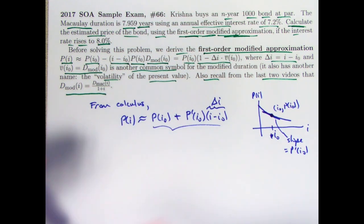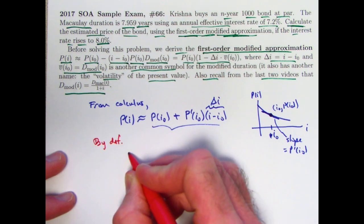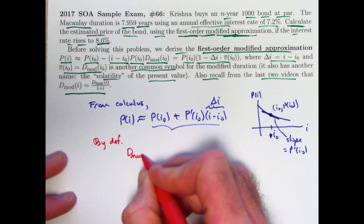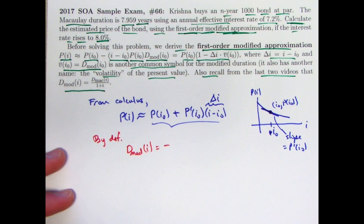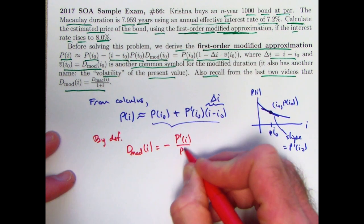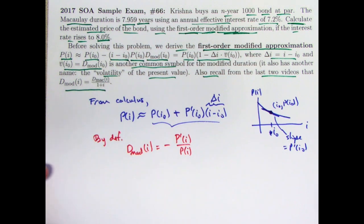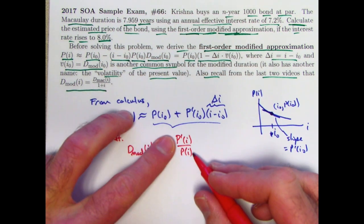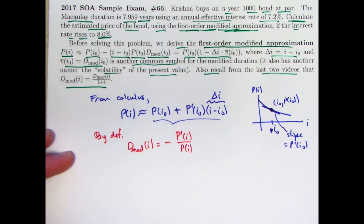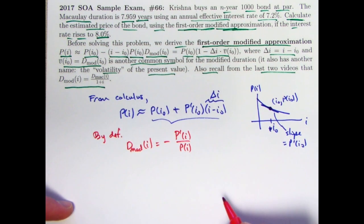So now we just use the definition of modified duration. By definition, we know the modified duration, d_mod(i), is the negative of the relative rate of change of p(i). Negative p'(i) divided by p(i). That does make the modified duration in this situation a positive quantity because p'(i) will be negative. The slope will be negative here. We divide by p(i) to make this a relative rate of change and put the negative sign in front of it to make this a positive quantity. You could call this the relative rate of decay of the function at any given number i for the interest rate.